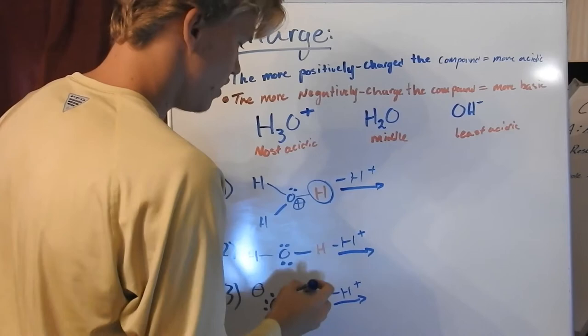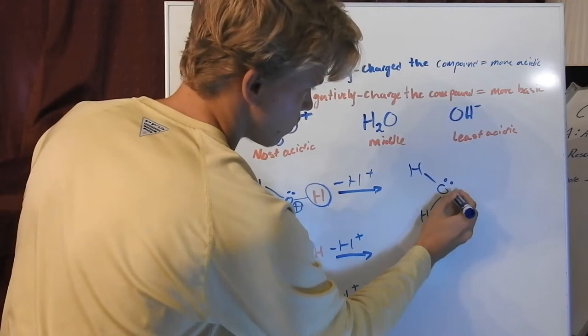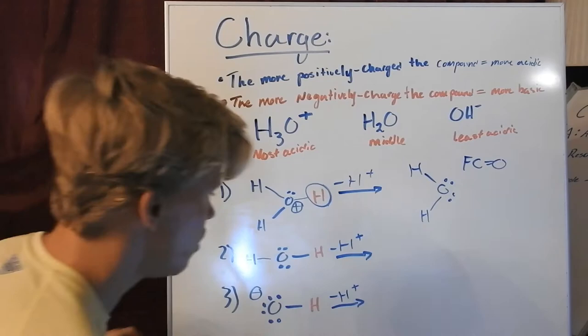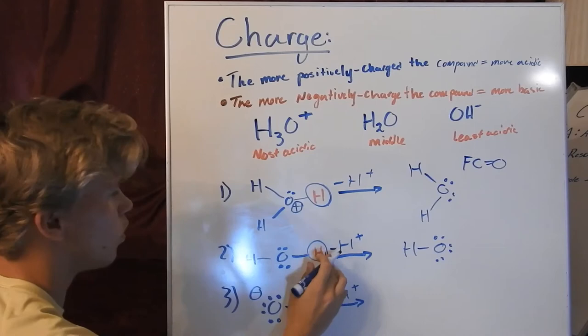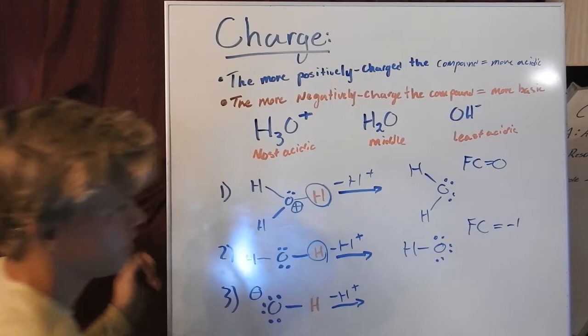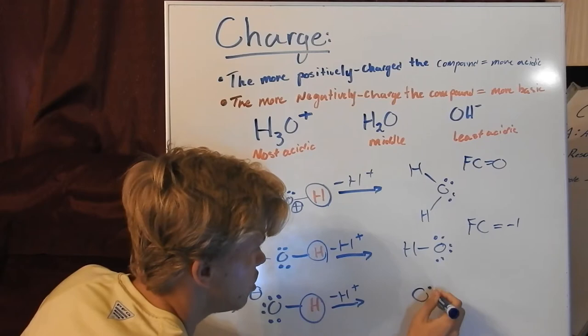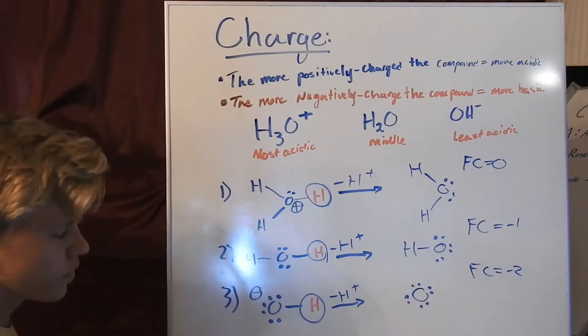Within each of these reactions, in the first one, we end up losing a hydrogen from H3O+ and we end up with H2O. The formal charge equals zero. With H2O, we lose a hydrogen and we end up with HO⁻. Subtracting one from the zero formal charge, we'll have a formal charge of negative one. Finally, with OH⁻, subtracting one hydrogen, we end up with an oxygen all by itself, with a formal charge of negative two.